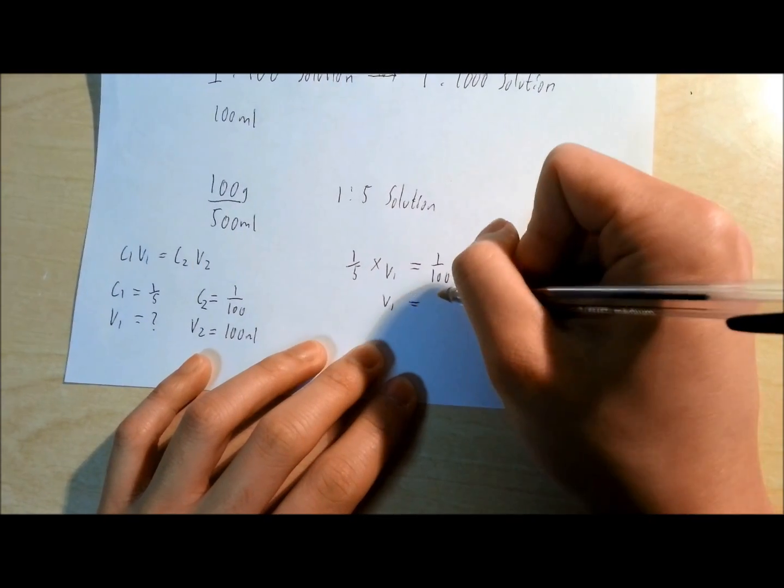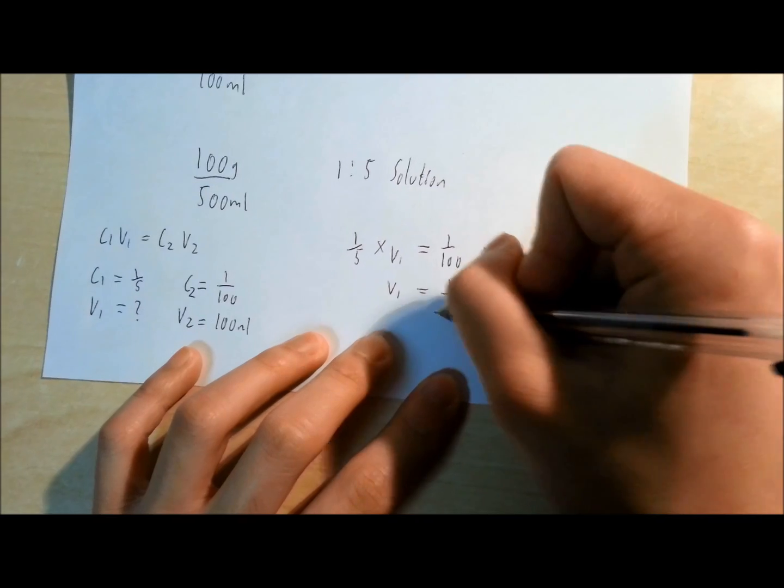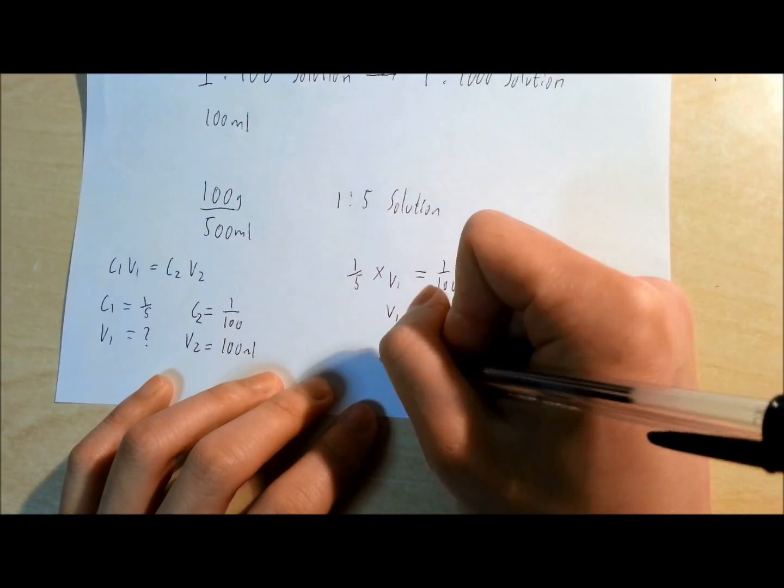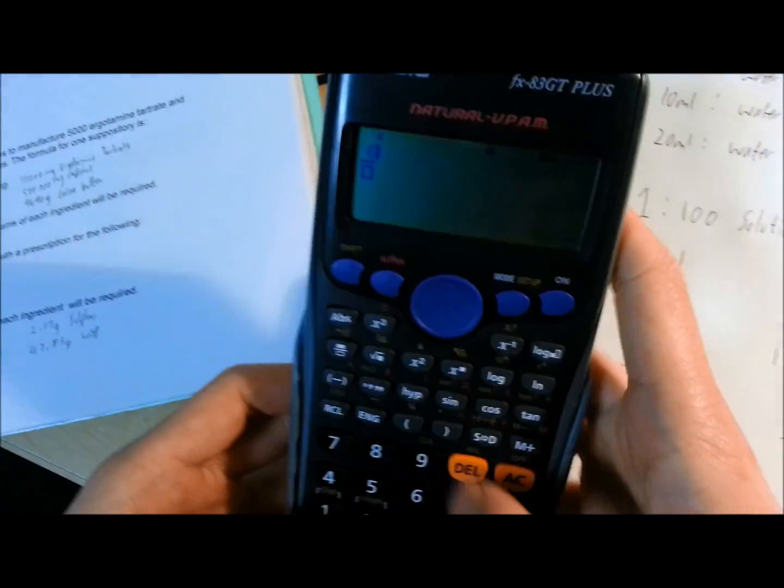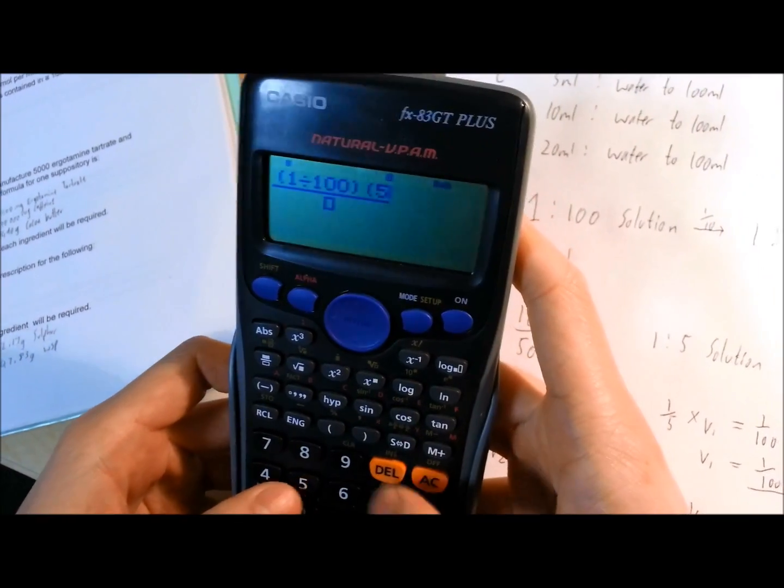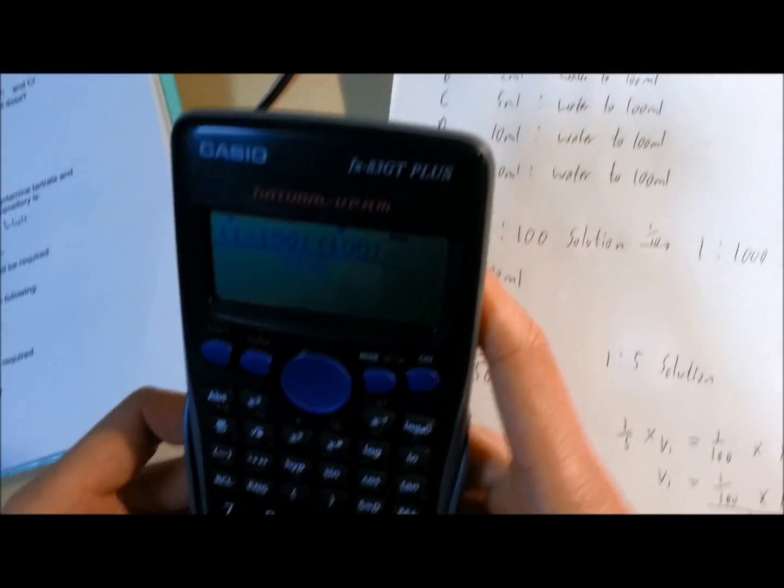Rearrange that equation. I'll type this into the calculator so that you know it's correct. So 1 divided by 100 times 100 divided by 1 divided by 5.